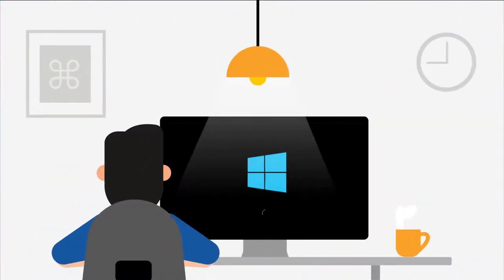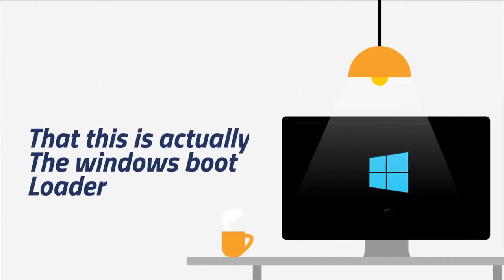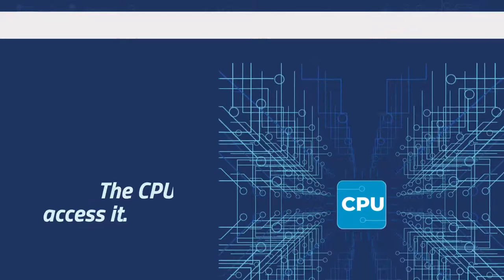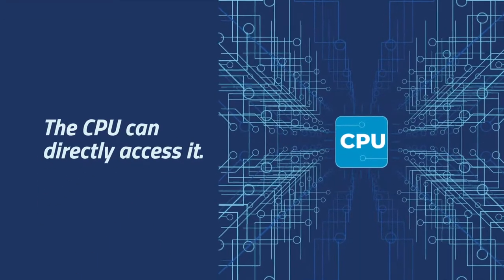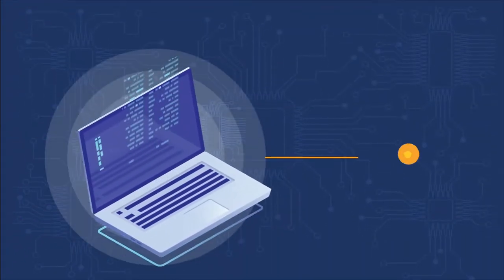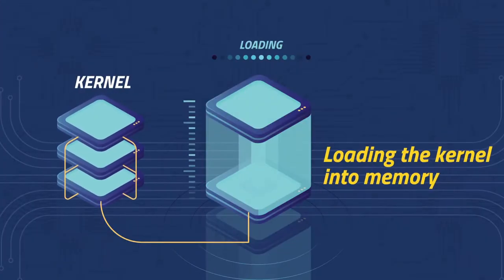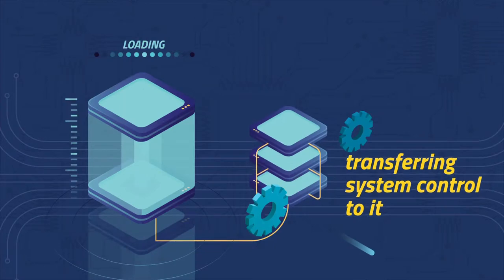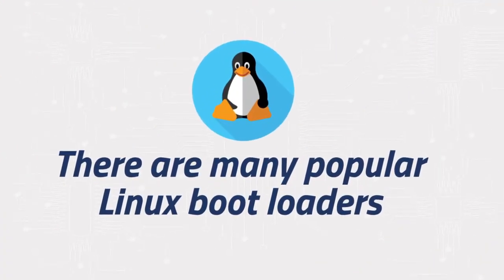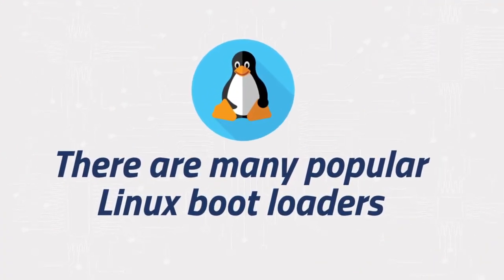Most users are probably familiar with the Windows logo splash that briefly appears when starting a PC, but what they probably don't realize is that this is actually the Windows bootloader copying the operating system into the main memory so that the CPU can directly access it. In Linux, the bootloader is a small program that is responsible for reading the kernel file, loading it into memory, and then transferring system control to it. There are many popular Linux bootloaders, including Grub, Lilo, and LoadLin.